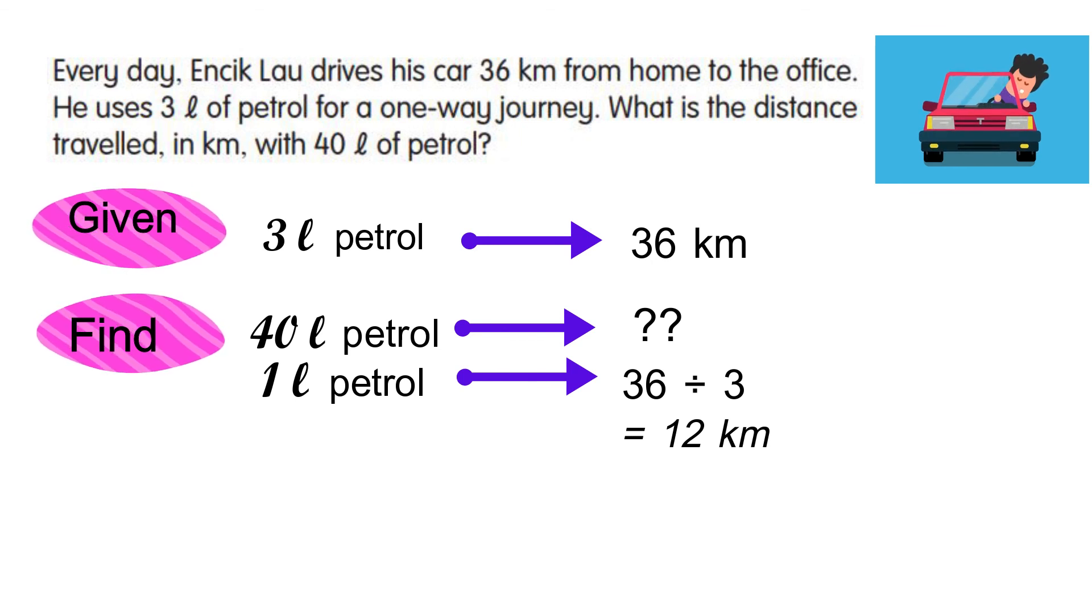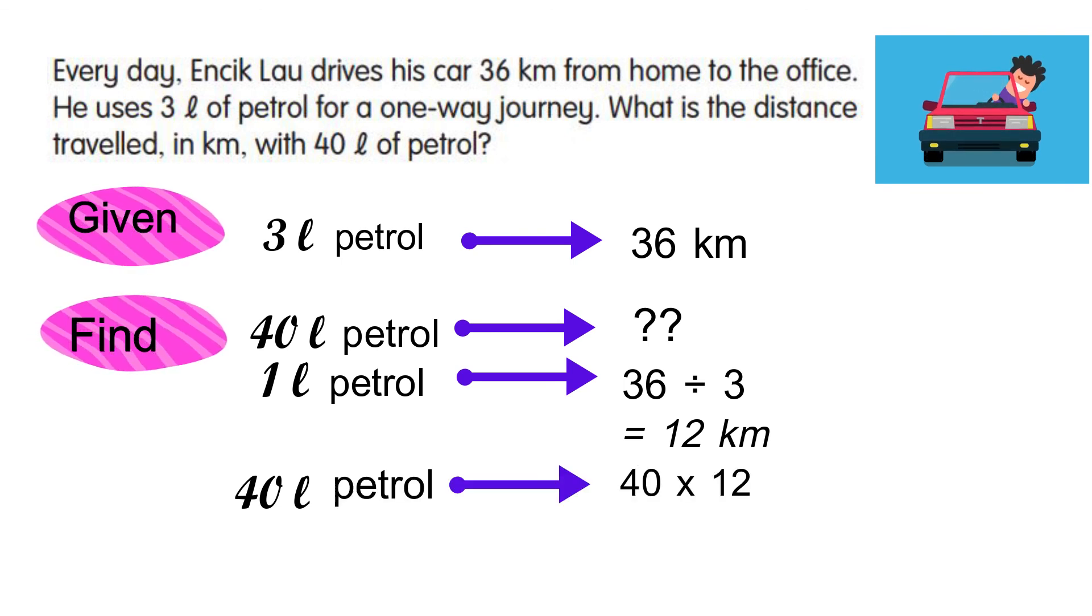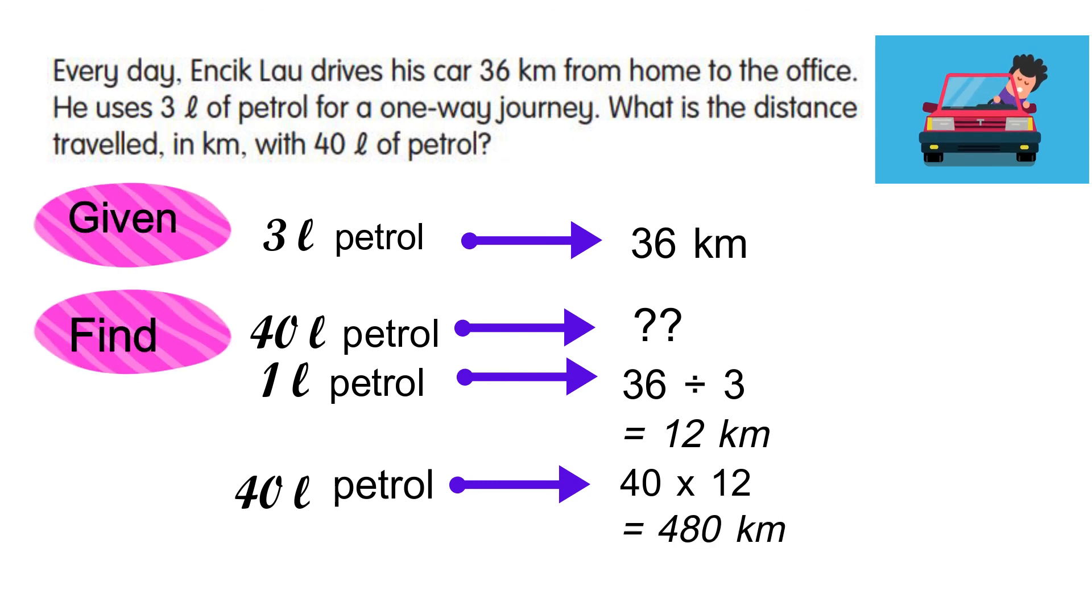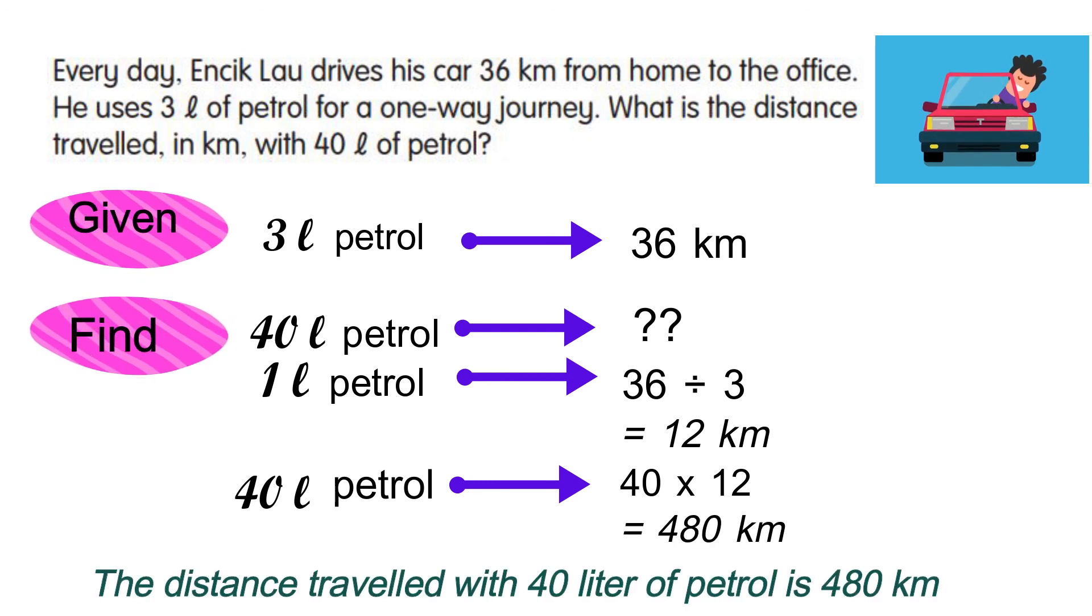To find the distance traveled with 40 liters of petrol, we need to multiply. So 40 multiplied by 12 kilometers, the answer will be 480 kilometers. So the distance traveled with 40 liters of petrol is 480 kilometers.